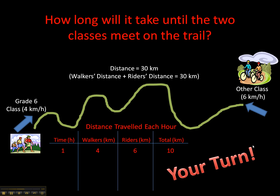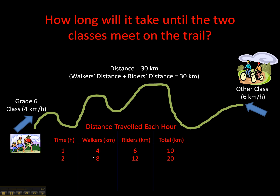Welcome back — I hope you paused the presentation. Let's check your answers. In hour 2, the walkers will have gone 8 km in total and the riders will have gone 12 km in total, because the walkers add 4 km each hour and the riders add 6 km each hour. The total of 8 and 12 is 20. In the third hour, the walkers have accomplished 12 km, the riders 18 km, and the total is 30.